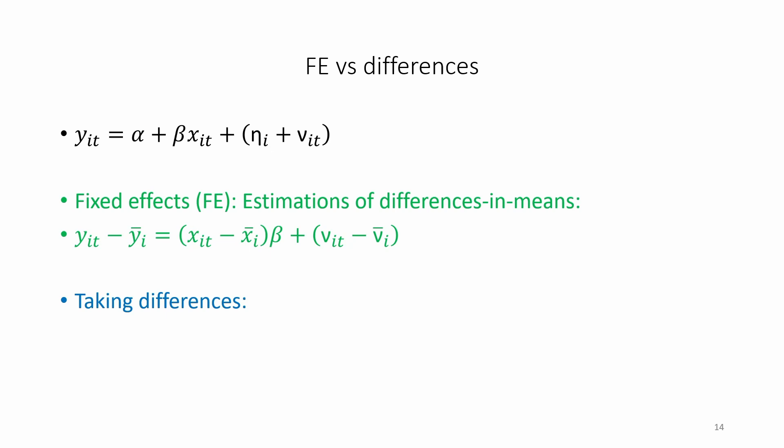Taking differences focuses on the changes from one period to the next. And by focusing on the changes, the time invariant term eta_i cancels out and disappears. We end up with a regression equation in differences.